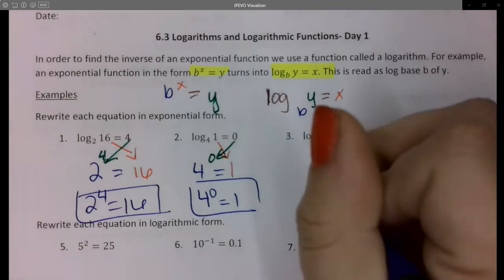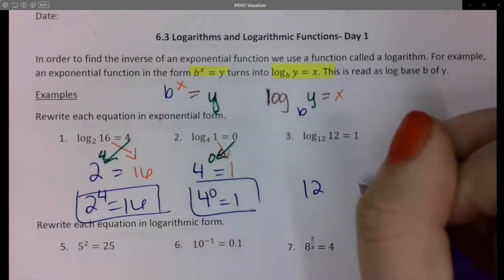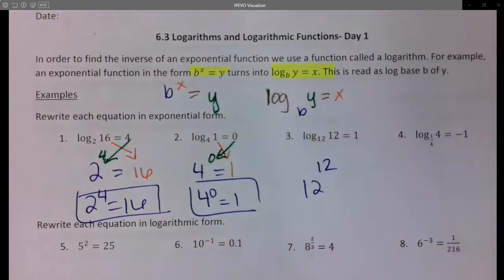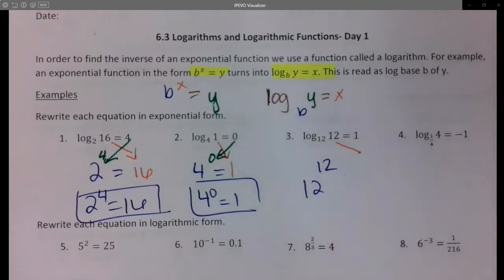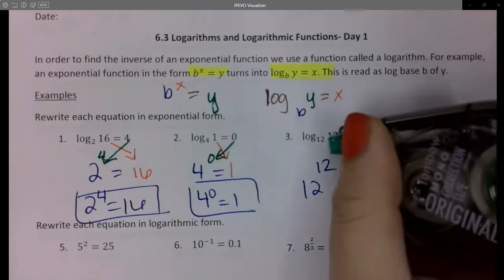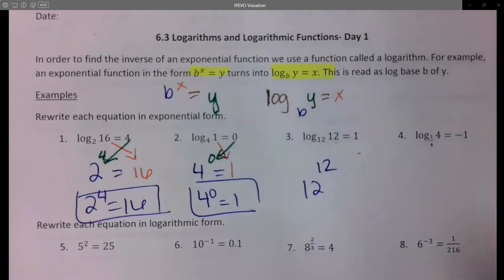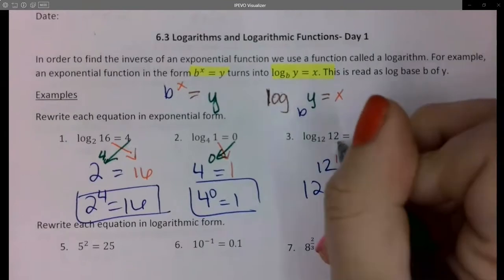Same thing for number 3. So it's going to be 12, and then the 1 becomes the exponent and this 12 becomes the answer.